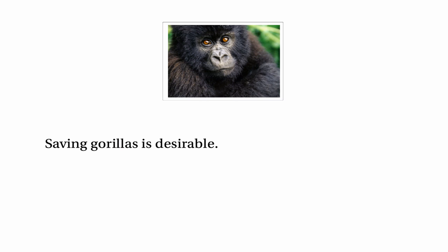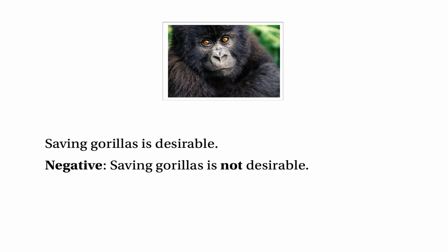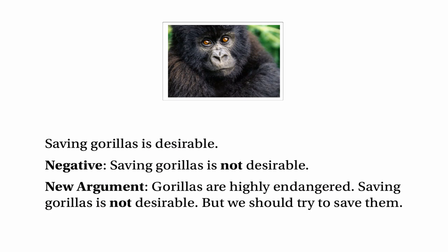First, let's focus on 'saving gorillas is desirable.' The first step is to negate that: 'It's not the case that saving gorillas is desirable' — or simply, 'saving gorillas is not desirable.' Now we combine that with the original argument: 'Gorillas are highly endangered. Saving gorillas is not desirable, but we should try to save them.' I hope you'll agree that that's ridiculous — that doesn't make any sense at all. If saving gorillas isn't desirable, the fact that they're highly endangered doesn't mean we should try to save them. The negative of that assumption destroyed the argument, which means the original statement is an assumption.